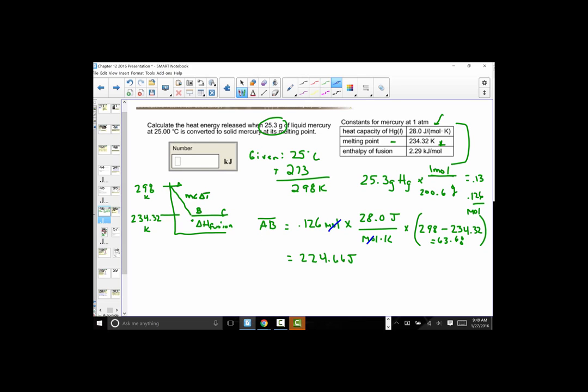We had a second line segment where we have to undergo the phase change using the enthalpy of fusion values. So again, I'm using the number of moles we calculated from above. The number of moles we solved for using the correct molar mass. And I'm simply going to use this conversion that it takes 2.29 KJs for every one mole to undergo the phase change.